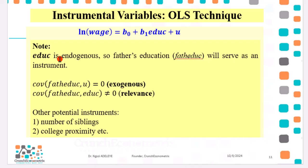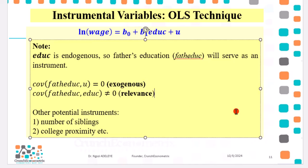Note, since we are assuming that EDUC is endogenous, we are going to use father EDUC to serve as an instrument. Father EDUC must satisfy two properties, exogeneity and relevance. So you can see right here, it must be exogenous and it must be relevant to the model.